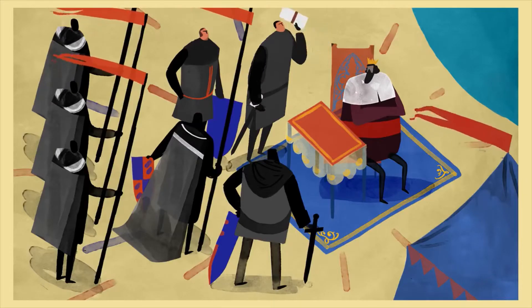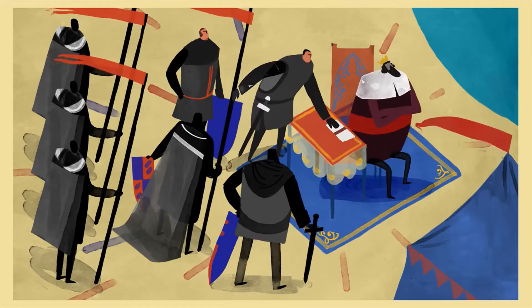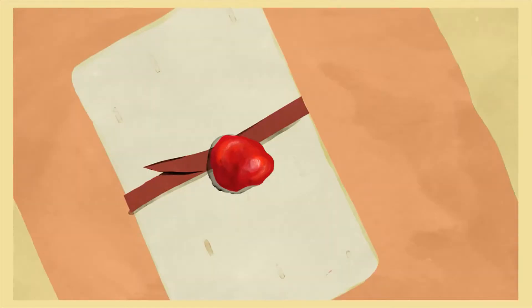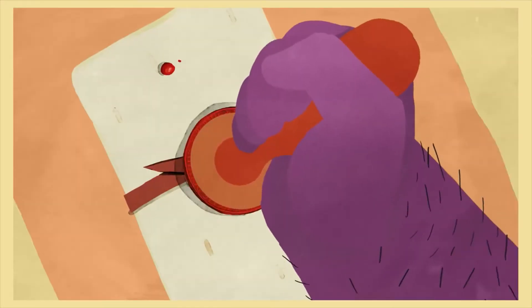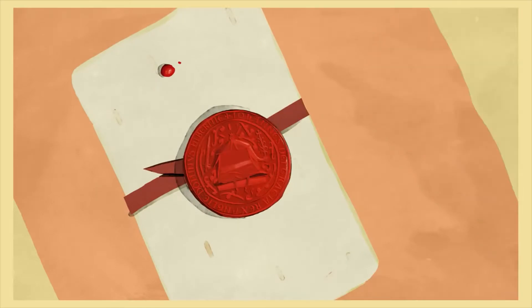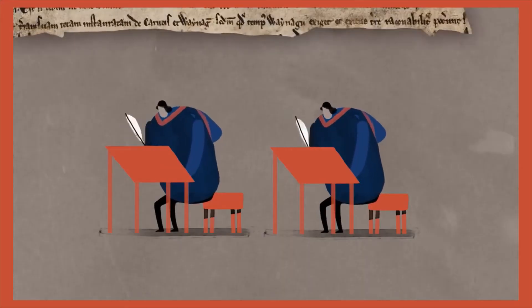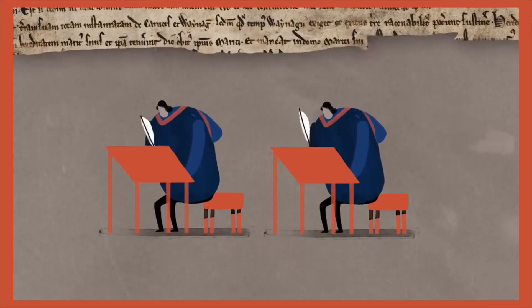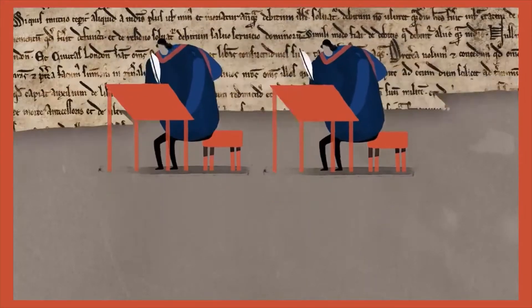The two sides met at Runnymede in June 1215. The result of the negotiations was written down by the king's clerks into the document we know as Magna Carta.